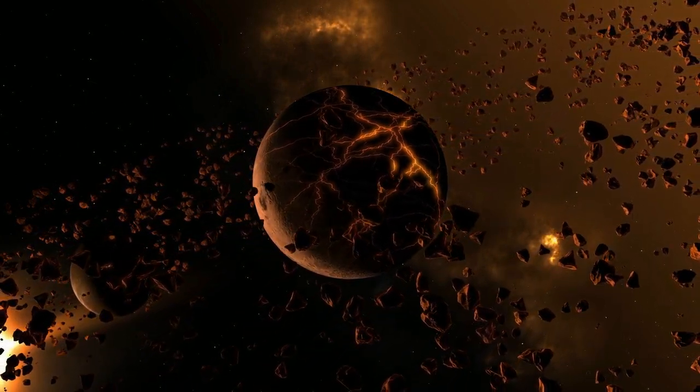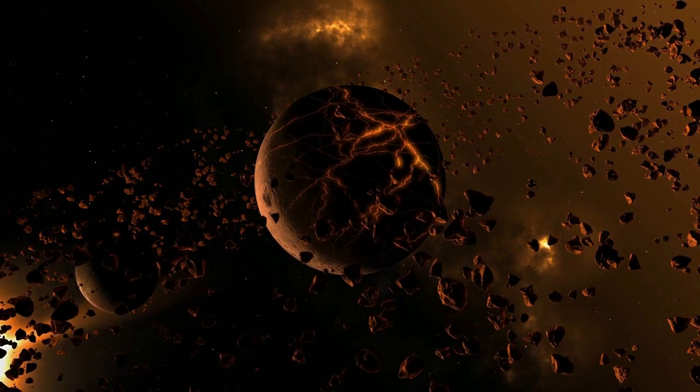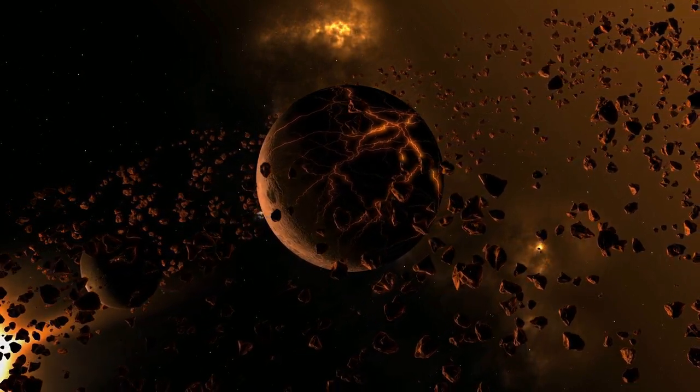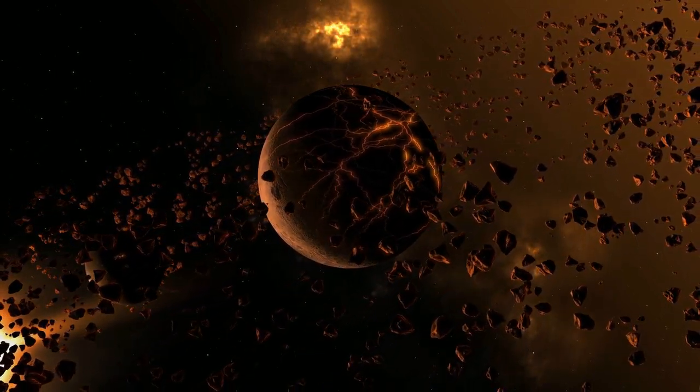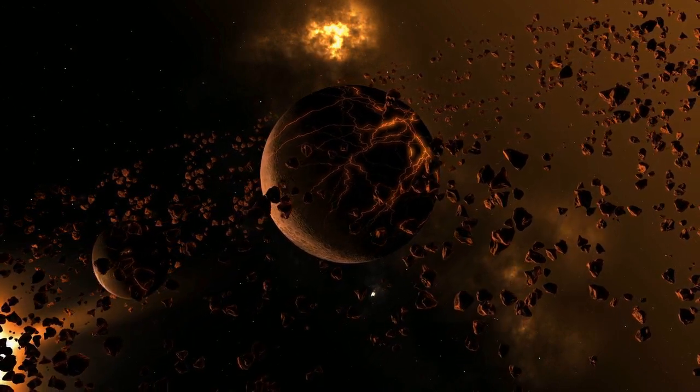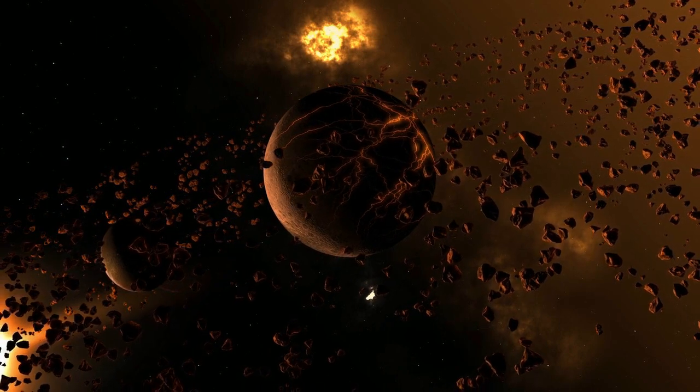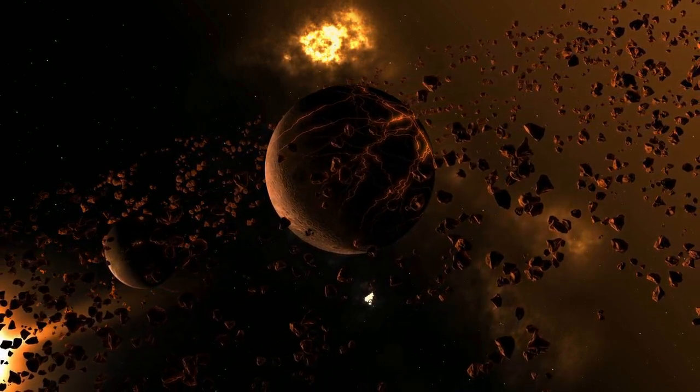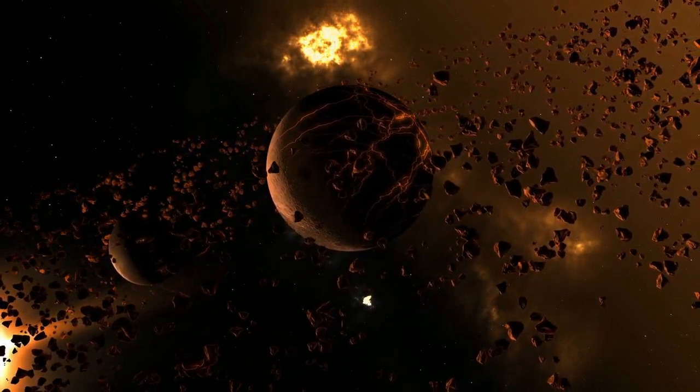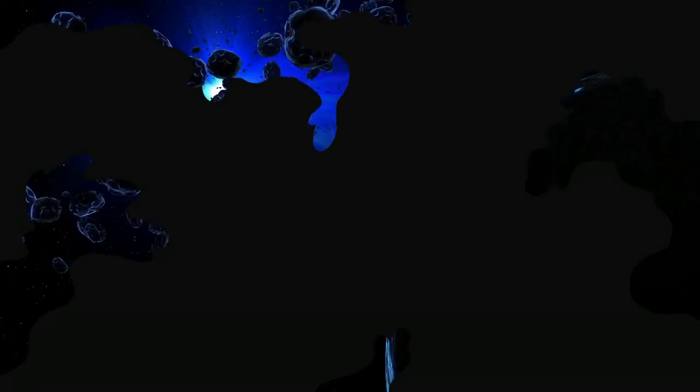Jupiter is often lauded as a shield for Earth, but that may not have always been the case. Recent studies suggest that gas giants speed up the time scale of impacts. Early in the life of the solar system, Jupiter tossed material helter-skelter, raining some of it on the terrestrial planets, while hurling some of it completely out of the solar system.